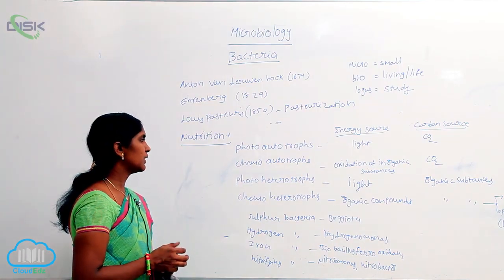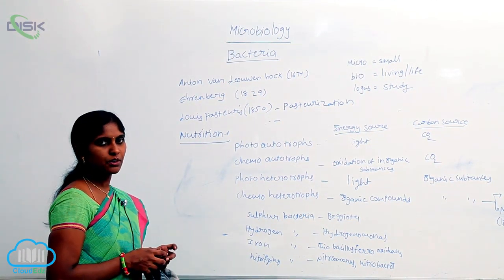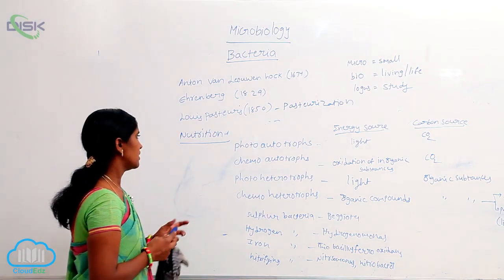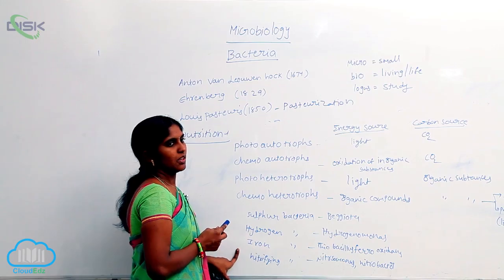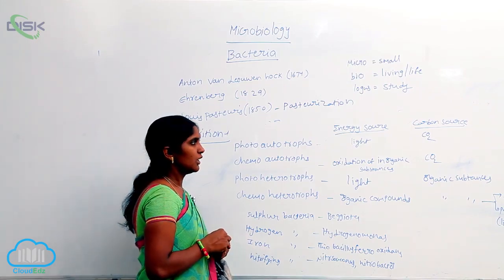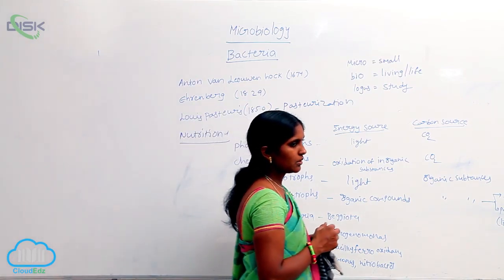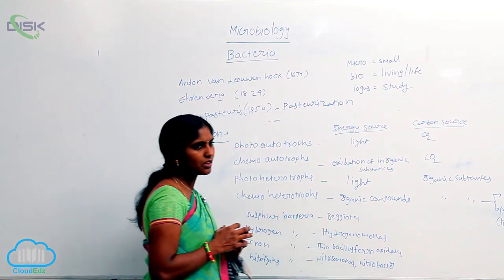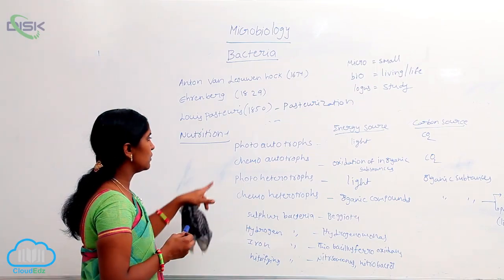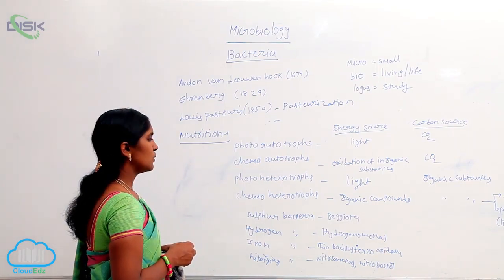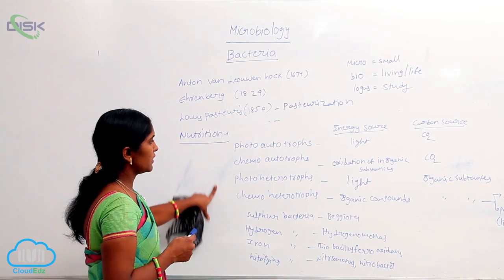Bacterial nutrition. Different types of nutritional types are found in bacteria according to their source of energy and carbon. From where they are getting their sources, according to that they are divided into different classes. So the nutrition is also explained in the form of this classification.